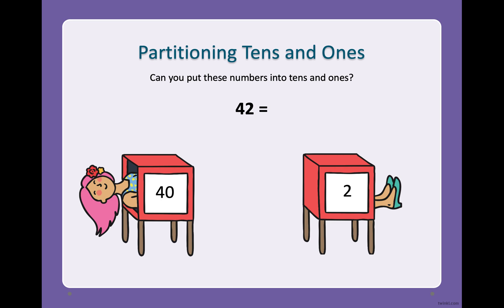40 and two. And if we separate it into tens and ones, we have 40 which is four groups of tens and two ones. So we say four tens and two ones.